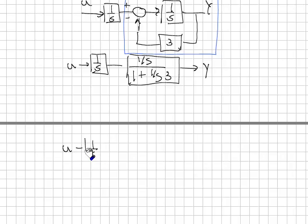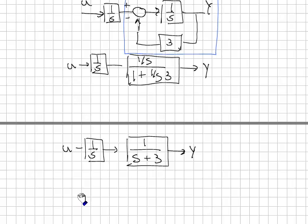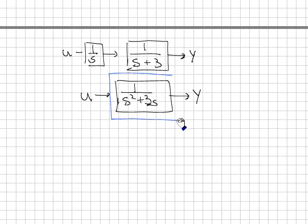u, 1 over s, multiply the top and the bottom of the block by s, gives me 1 over s plus 3. Now, I can apply my second rule, which allows me to combine blocks in series. That's done by multiplying the blocks. So, my final is u goes into 1 over s squared plus 3s, y. And the transfer function is given right here.